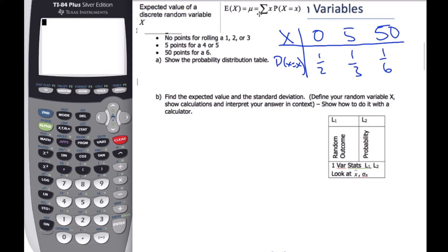And so what it says is I'm going to add product of x times its probability. So if I'm going to find my expected value of x, it's going to be zero times a half, plus five times a third, plus 50 times a sixth. And when I do that calculation, I end up getting 10. And so what this means is that on any roll, I can expect to get 10 points.